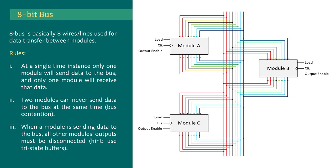Now we will discuss the 8-bit bus. An 8-bit bus is basically just 8 wires, and all the modules are connected with this bus so that data transfer can happen among the modules.